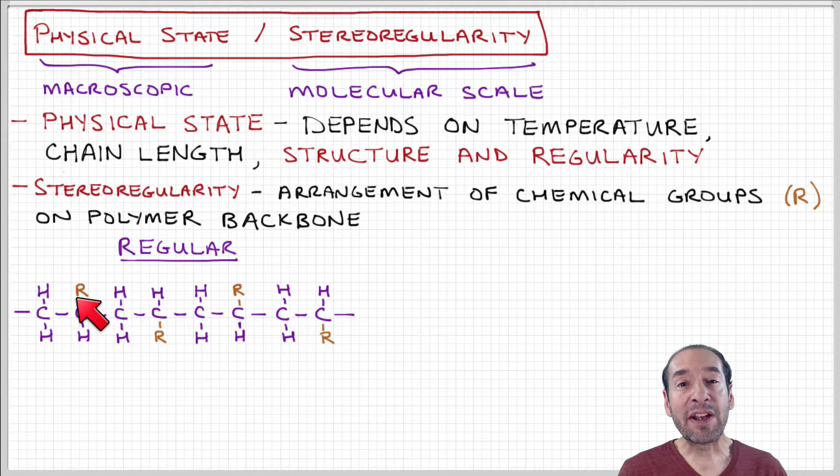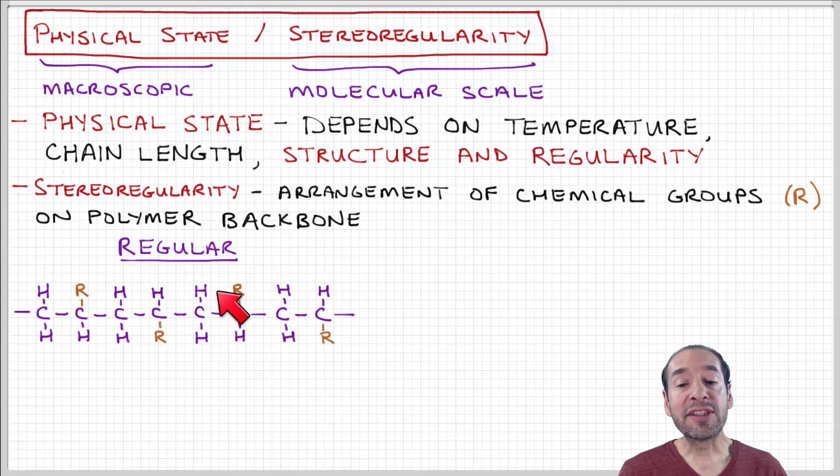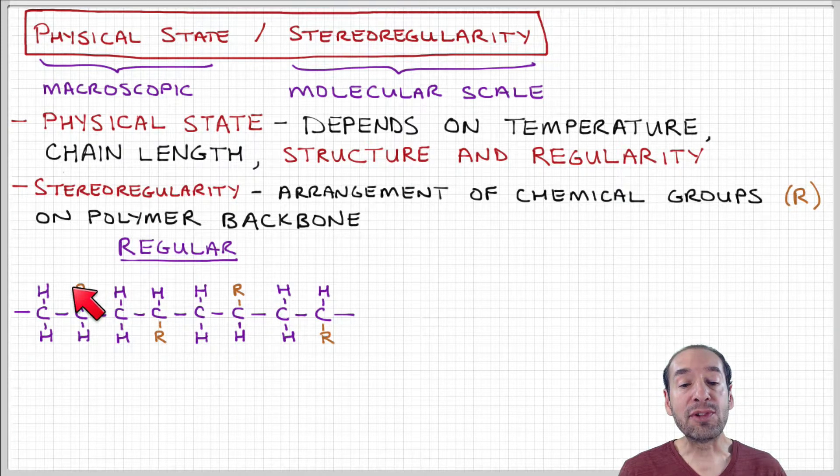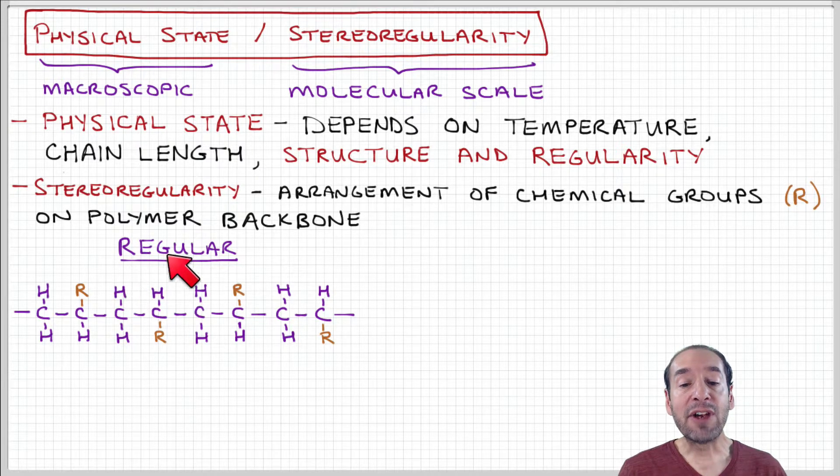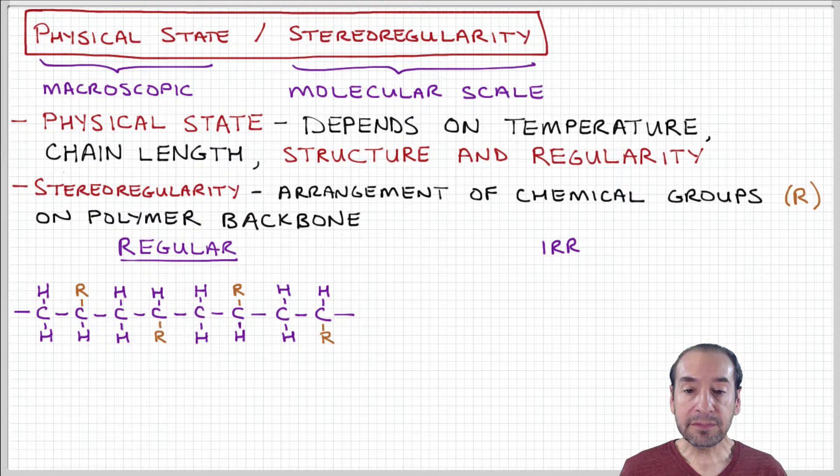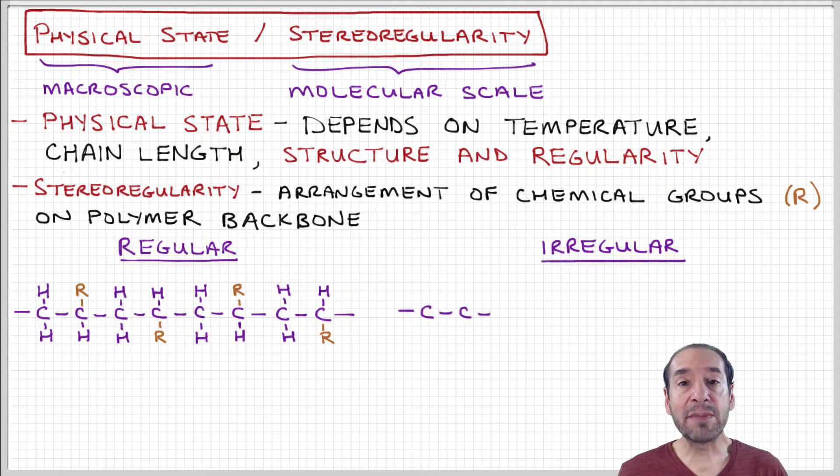Now, we didn't talk about how this carbon ring is distributed across the length of the polymer chain. We could imagine a regular distribution where this carbon ring or this side group follows a predetermined pattern in its arrangement along the polymer backbone. So here it's on the top, then in the next repeat unit it's on the bottom, then on the next repeat unit it's on the top. So it follows a regular pattern.